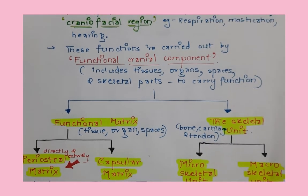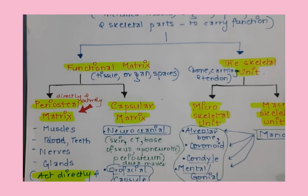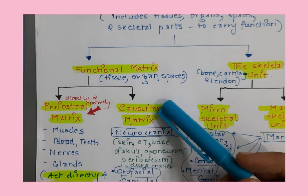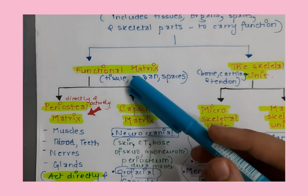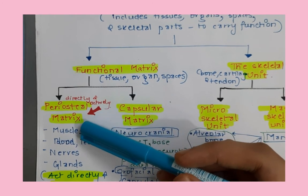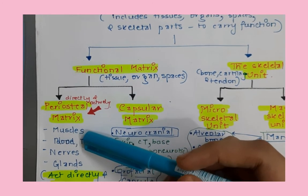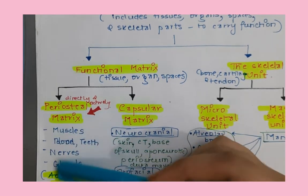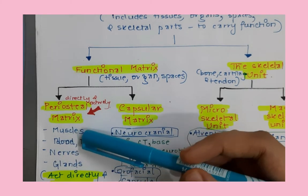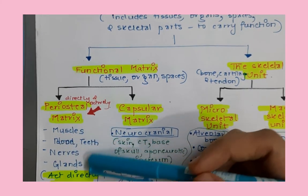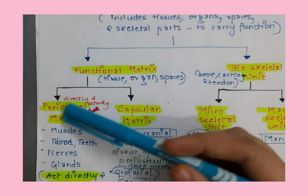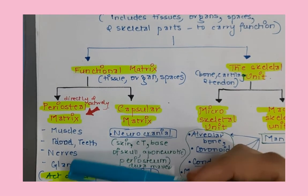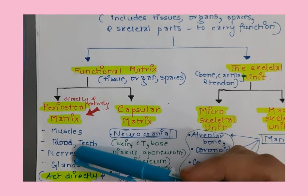The functional matrix is divided into periosteal matrix and capsular matrix. The periosteal matrix includes muscles, blood vessels, teeth, nerves, and glands. These periosteal constituents act directly and actively on the skeletal units — specifically microskeletal units — to perform a particular function, and they actively and directly cause changes or transformation in those skeletal units.